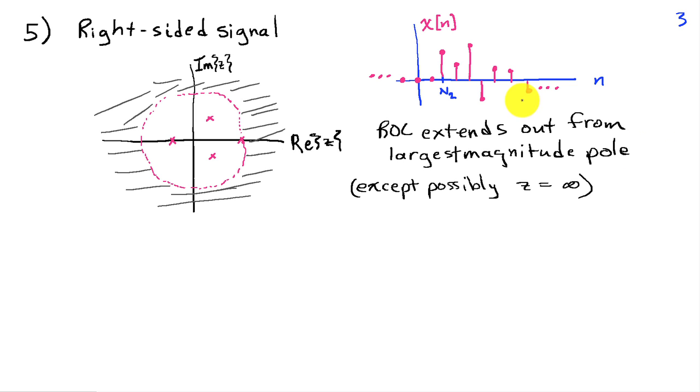If we have a right-sided signal, as shown here, and what that means is that the signal is 0 for all values of n less than some value n2, so it's non-zero to the right of capital N2, then it turns out that the ROC extends outward from the pole with the largest magnitude. So in this case, this pole here is the one with the largest magnitude or the largest radius. If we draw a circle that passes through that pole, then that will define the region of convergence to be the region outside of this, with the exception of possibly z equals infinity, depending on whether n2 is greater than 0.